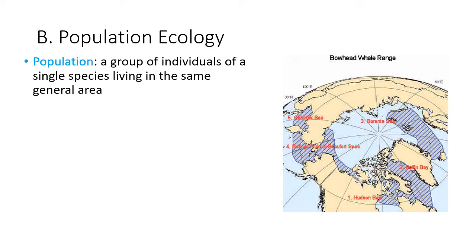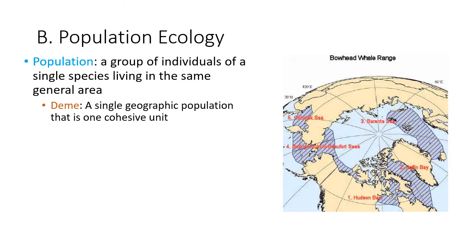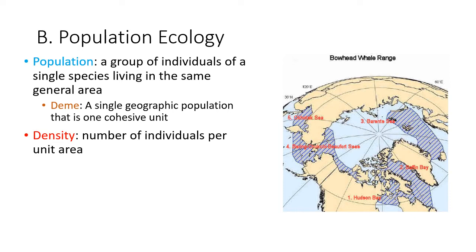Moving into population ecology: a population is a group of individuals that reproduces within a geographic area. A deme is a single geographic population — one cohesive unit. You may have a deme that's like a small family social unit, like a pride of lions, or you may have multiple prides considered to be one deme. Demographics, then, is the study of those demes.